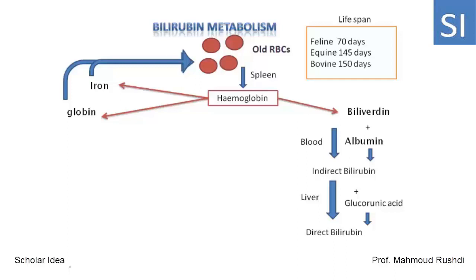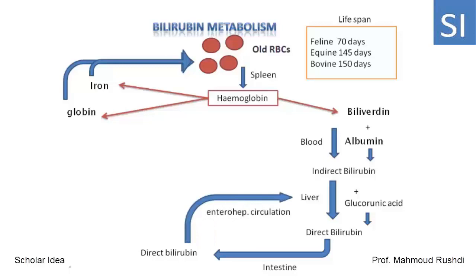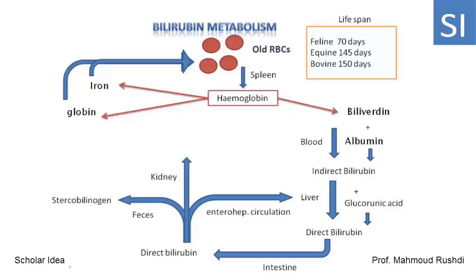The hepatocytes secrete the direct bilirubin into the bile canaliculi, which then reaches the main bile duct and then the intestine. In the intestine, the direct bilirubin has three pathways: the first is return to the liver through the enterohepatic circulation; the second is excretion in feces as stercobilinogen; and the third reaches the blood circulation and is excreted in urine as urobilinogen. This represents the normal bilirubin metabolism.